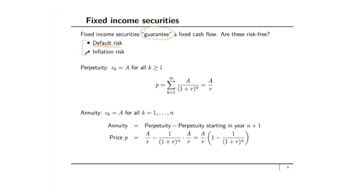The simplest fixed income security is a perpetuity, which pays an amount A from year 1 through infinity. It pays nothing right now and starts paying from year 1 onwards indefinitely. Using the present value formula at interest rate R, the price is the sum of A/(1+R)^K for K from 1 to infinity. Summing this infinite geometric series gives the price as A/R.